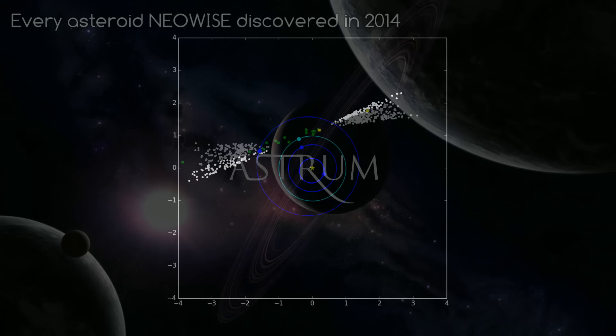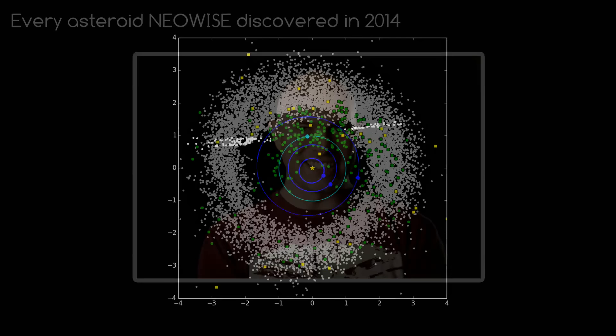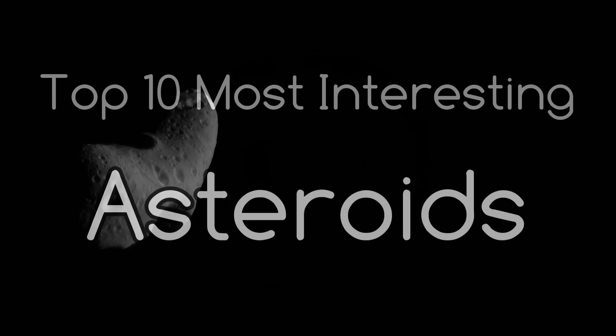There are literally millions of asteroids in our solar system and surprisingly there are also many different types. They're not just found in the asteroid belt but are in reality darting all around our solar system. My name is Scott Manley and you're watching Astrum, and today we're going to discuss some of the most interesting asteroids we've discovered so far.